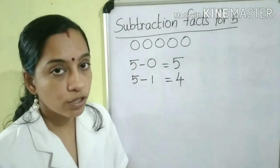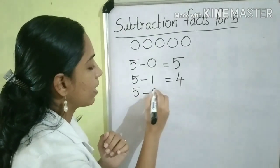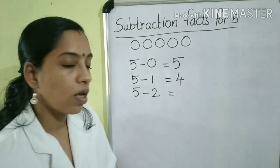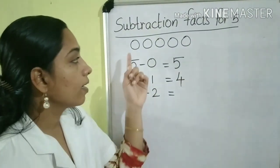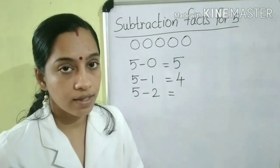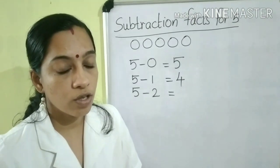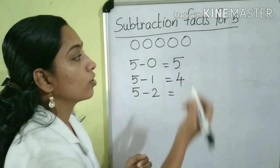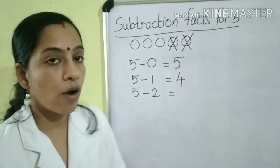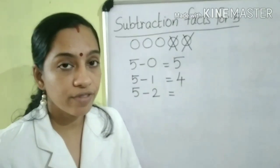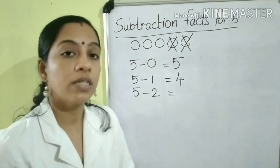Next, we have to subtract 2. That is, 5 minus 2. How do you get the answer? Here you can see 5 circles. We have to subtract 2 from 5, so we can cut 2 circles: 1, 2. Then count how many circles are left — 3. That is, 5 minus 2 is equal to 3.